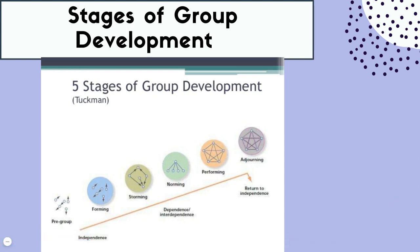In the forming stage, people are feeling one another out, coming up with group expectations and the purpose of the group. People are often very non-confrontational because it's the first couple of experiences meeting one another, so people might not feel comfortable sharing their opinions or expressing their thoughts.